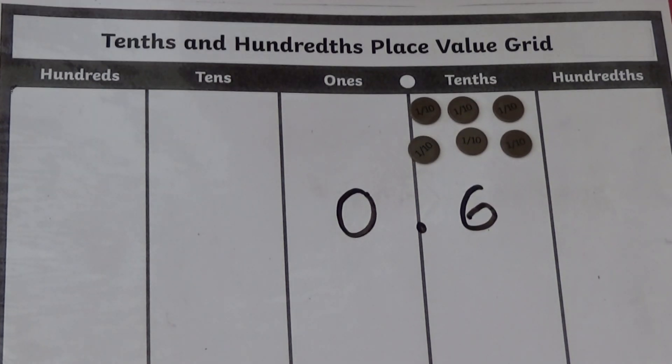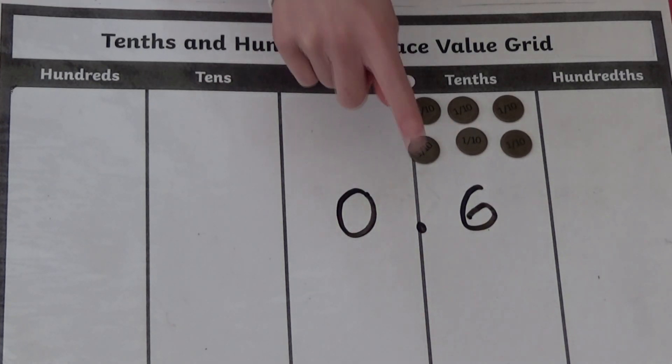So here we can see we have no ones, a decimal point and 6 tenths. We can also use tens frames and a place value grid to do decimal numbers above 1.